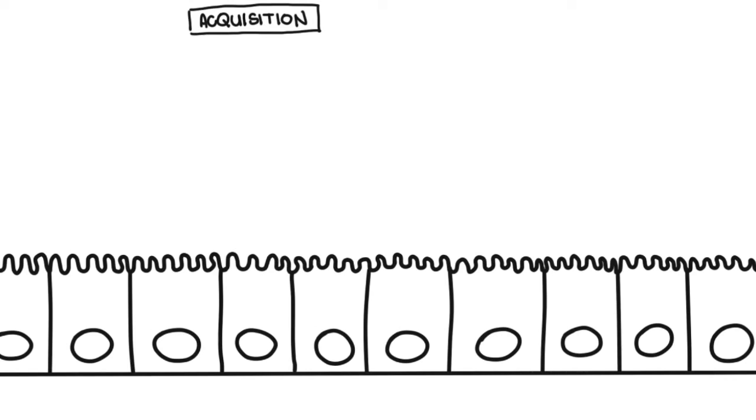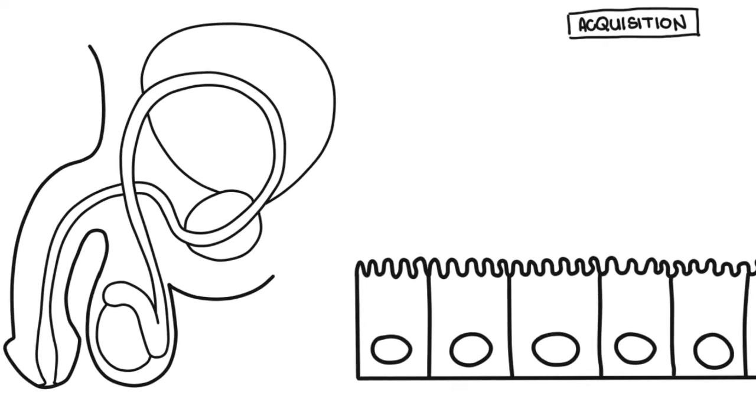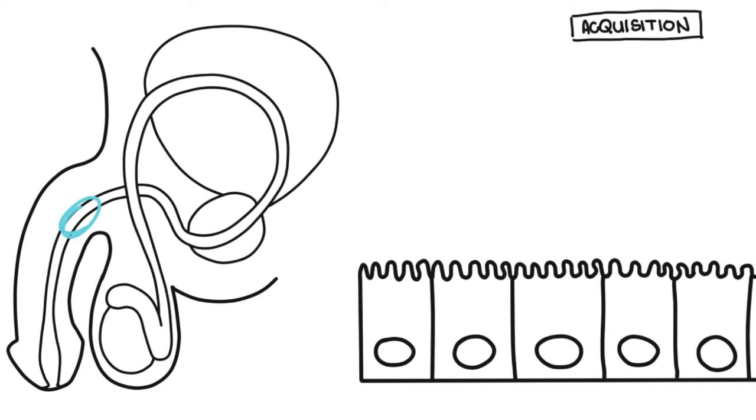Neisseria gonorrhea infects primarily columnar epithelial cells. In this scenario, it is in the urethra or the vaginal epithelium.